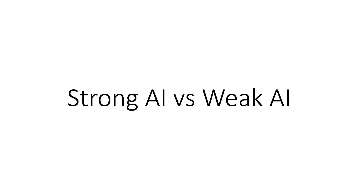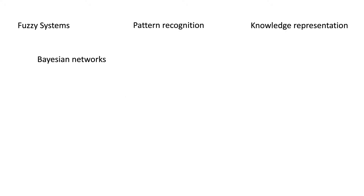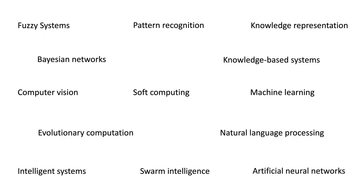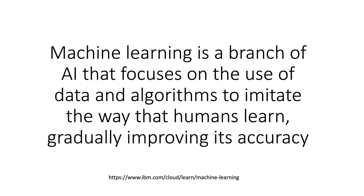Weak AI is pretty much anything that isn't strong AI. Most applications you hear and read about today are probably going to be considered in the weak AI category, but there's nothing wrong with that. AI is a very broad subject matter that includes lots of different types of knowledge representation, learning, and algorithms. What we're going to concentrate on are the types of applications you're most likely to see today, and that includes machine learning. Machine learning is defined as a branch of AI that focuses on the use of data and algorithms to imitate the way that humans learn, gradually improving its accuracy.